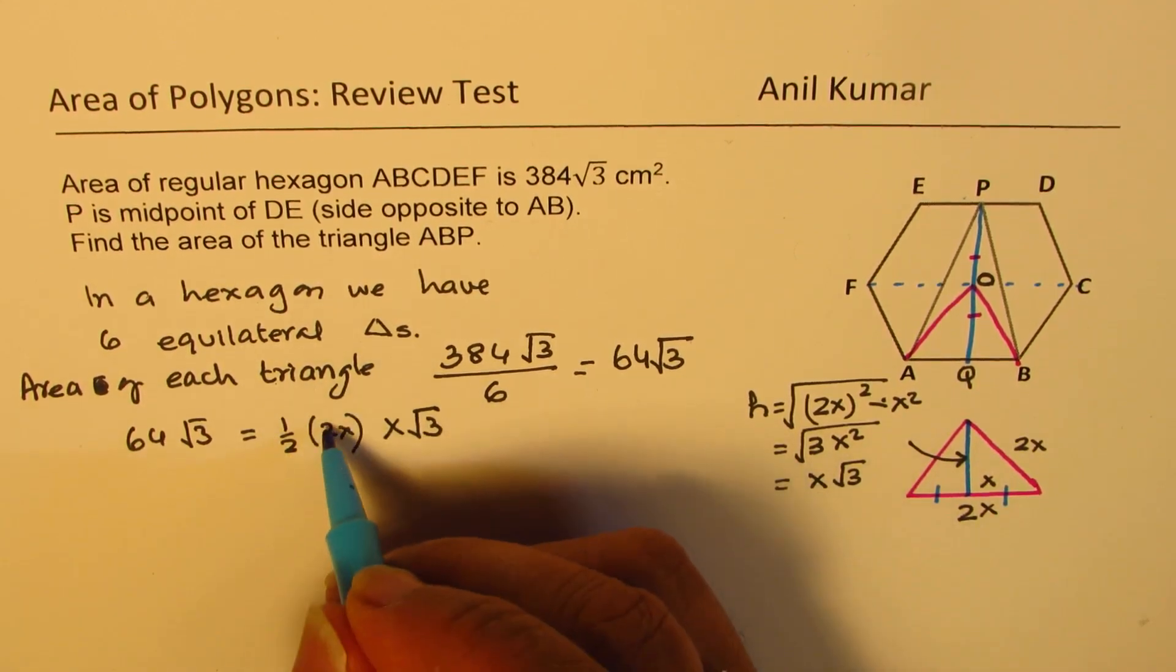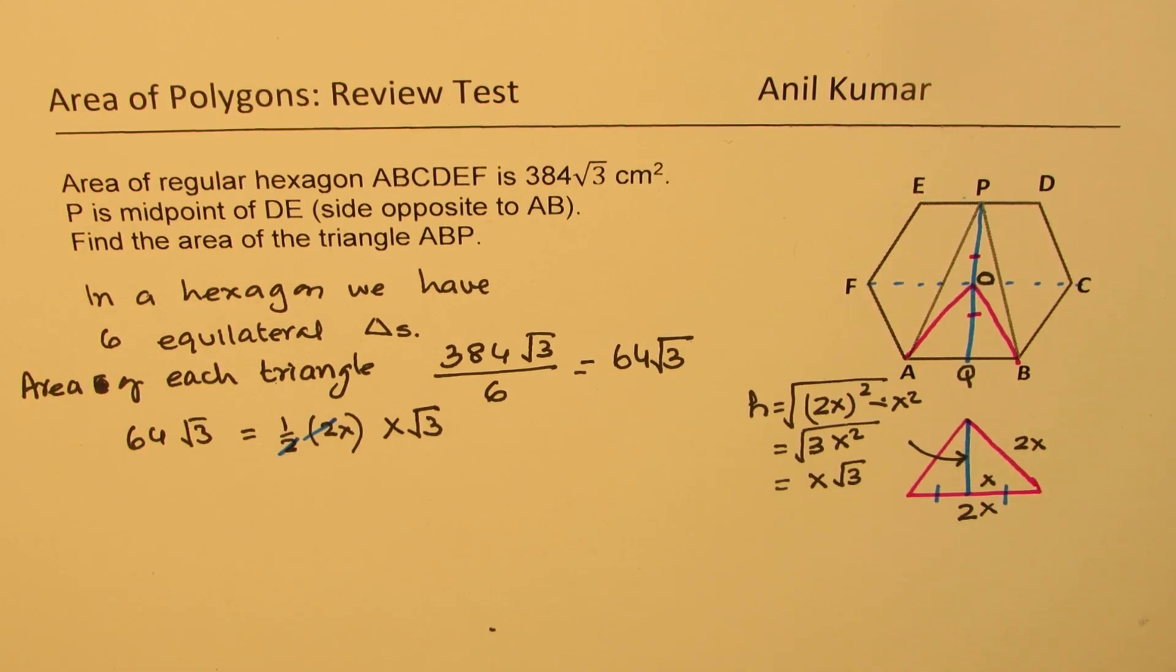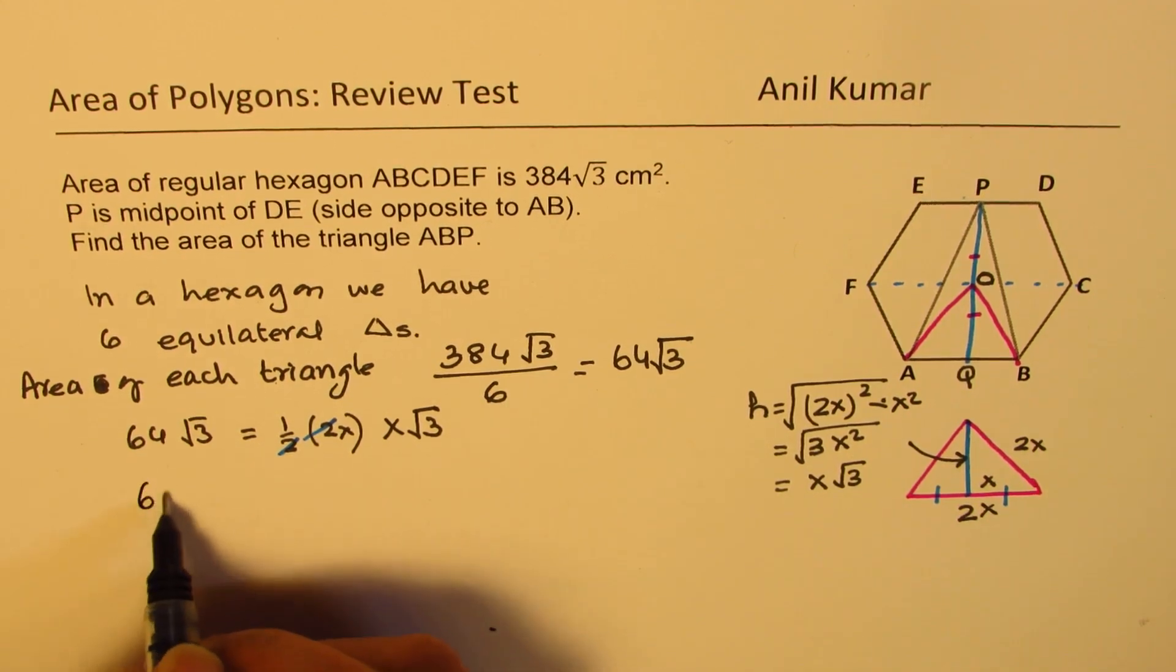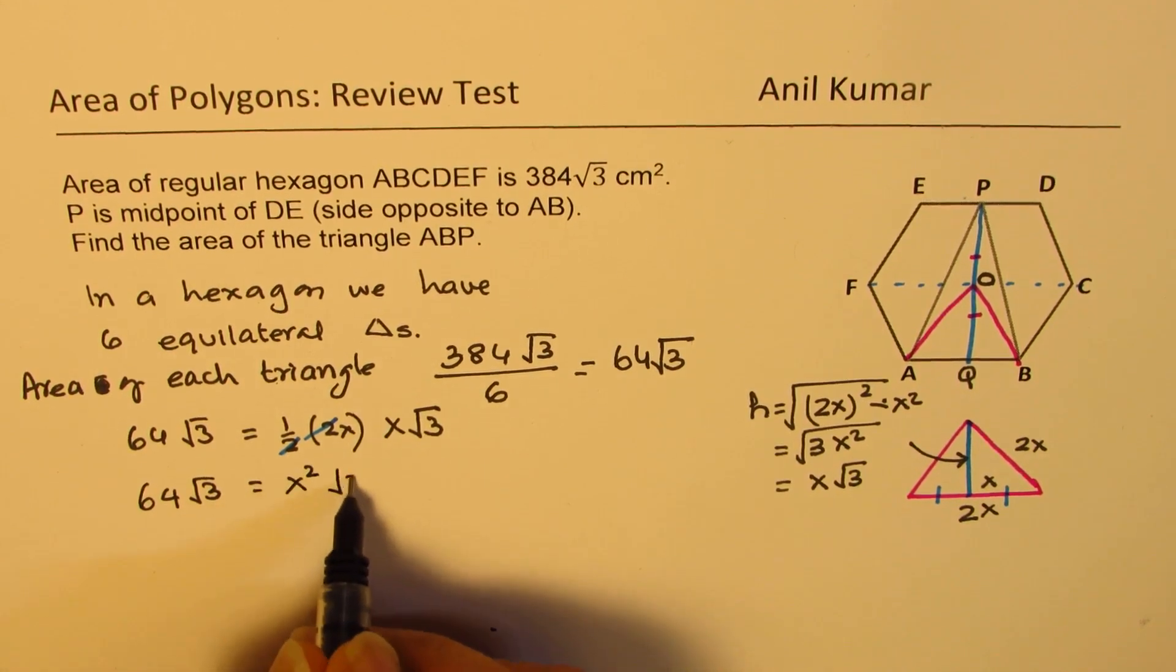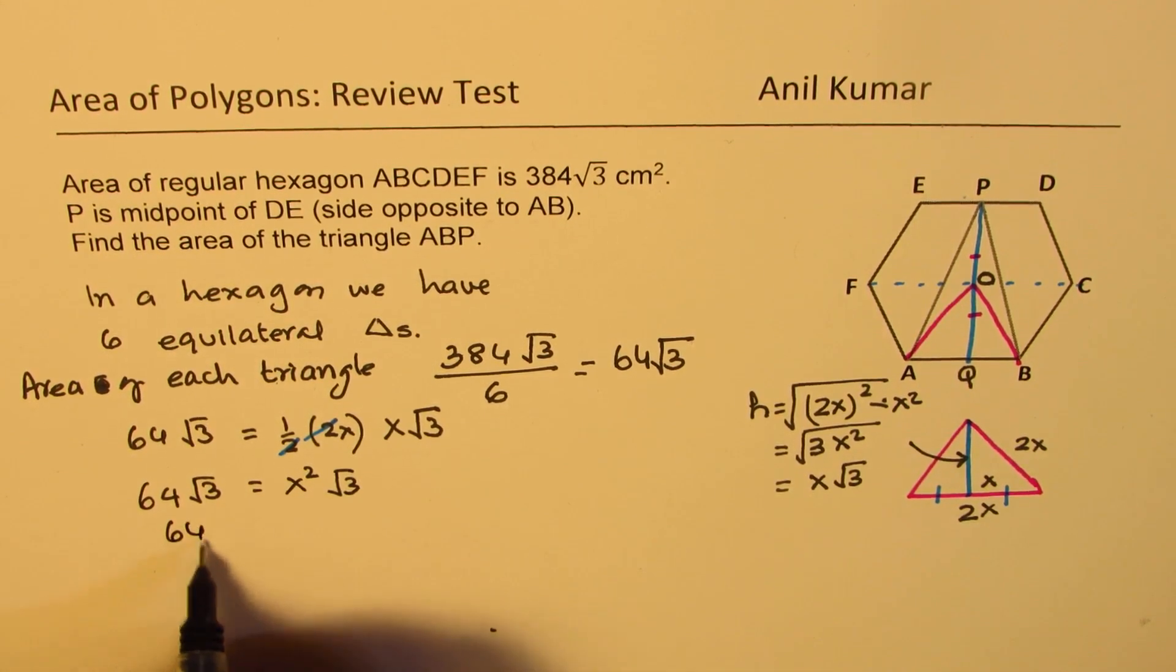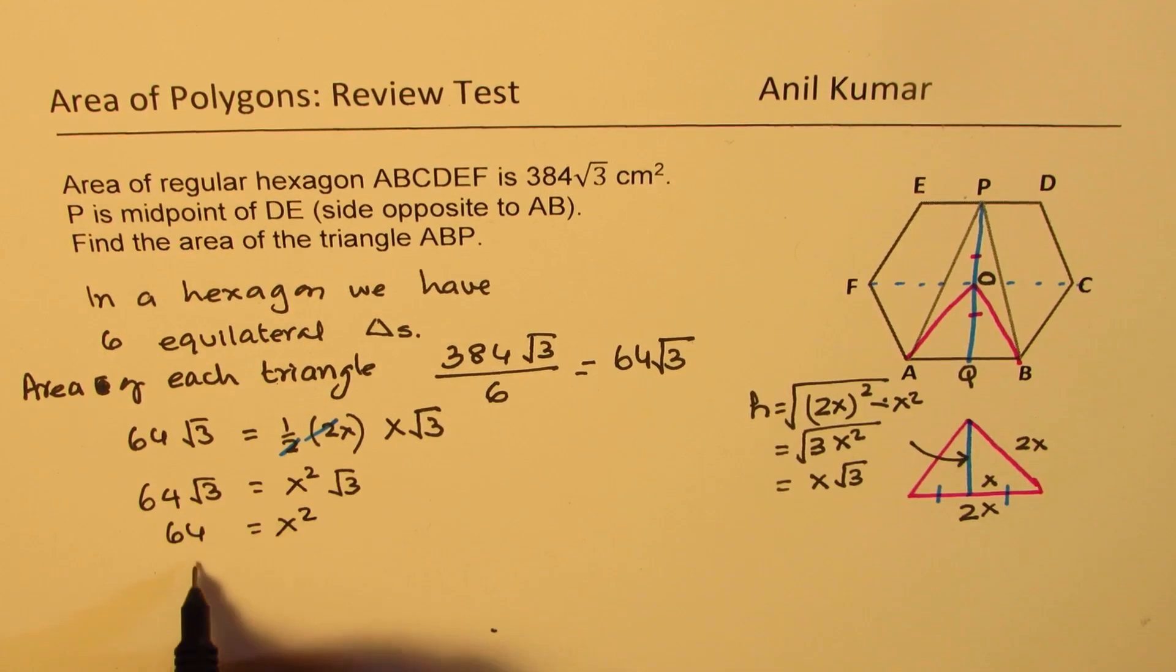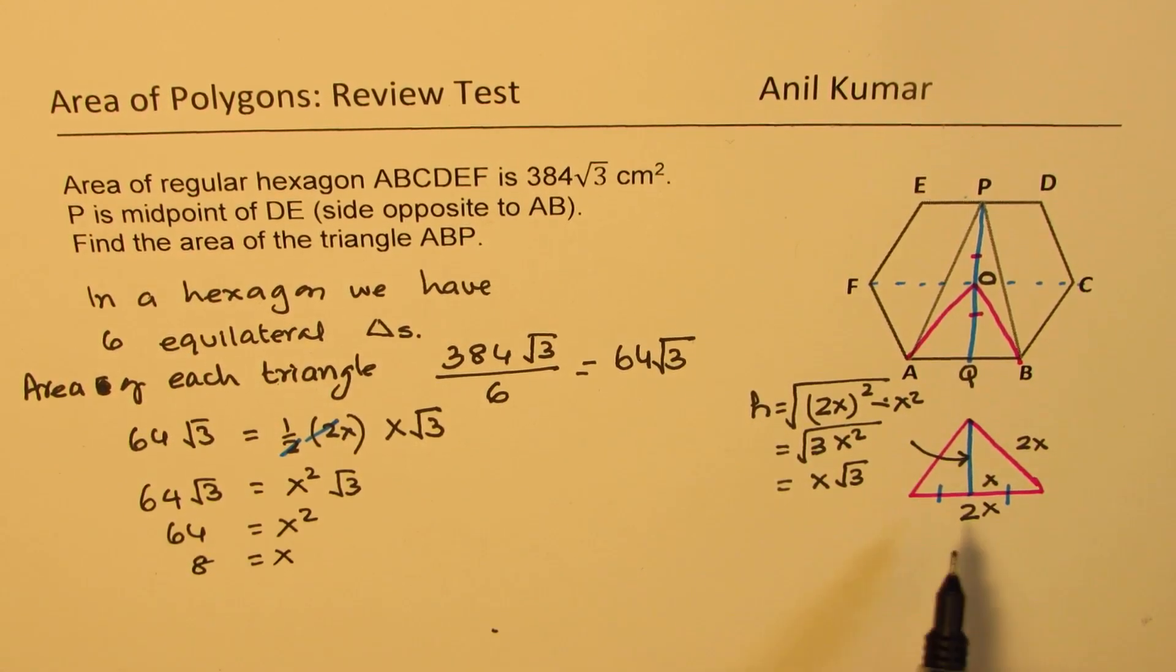If you simplify, this 2 and 2 cancel, so we get 64√3 equals x²√3, or 64 equals x², we can say 8 equals x. So that means each side length is 2x, which is 16.